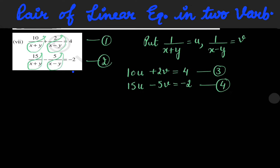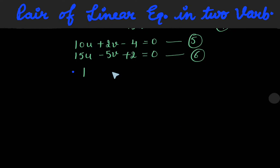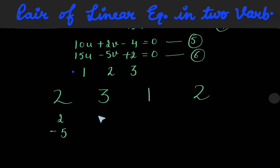You can solve it by any algebraic method. I am solving it by the cross multiplication method. We will rewrite the equations as: 10u plus 2v minus 4 is equal to 0 — this is equation number 5 — and 15u minus 5v plus 2 is equal to 0. Now we label the columns 1, 2, and 3. We write the coefficients: column 2 gives 2, minus 5; constant terms 4, 2; then 10, 15; again 2, minus 5.